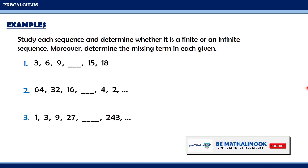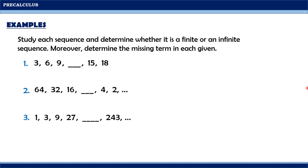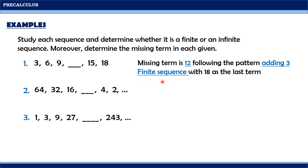Let us consider these examples. Study each sequence and determine whether it is finite or infinite, and determine the missing term. For the first one, the first term is 3, the second term is 6, the third term is 9. The pattern is adding 3. So to find the missing term, we add 3 to 9, giving us 12. The sequence is finite with 6 terms, since there is no ellipsis at the end.